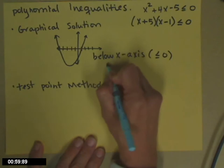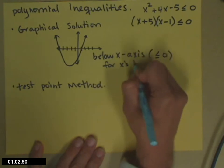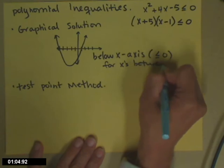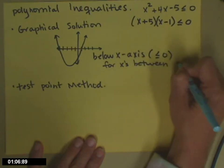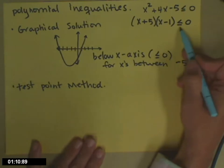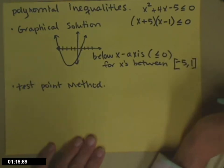For all x's between negative five and one. And since it's or equal to, that means the negative five and the one are both included. So we use the brackets to include them like that.